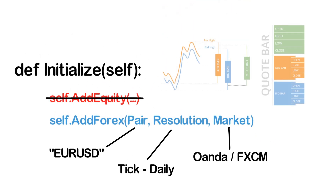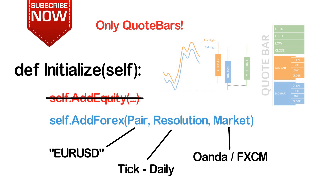One of the main differences between Forex and equity data is that Forex data only supports quote bars and no trade bars. The difference is that quote bars are built by consolidating bids and asks from exchanges, while trade bars are built from actual trades. For more details on quote bars and trade bars, check out the fourth video of this series.